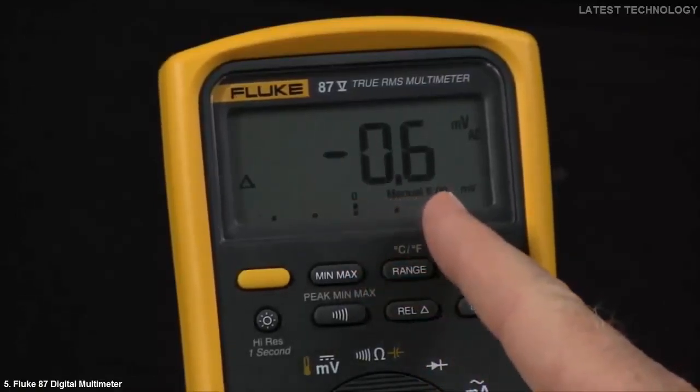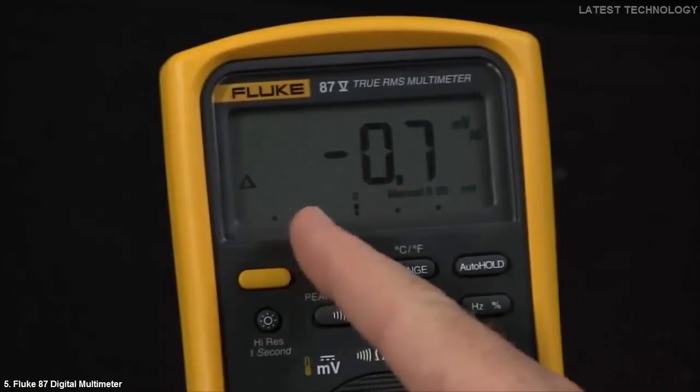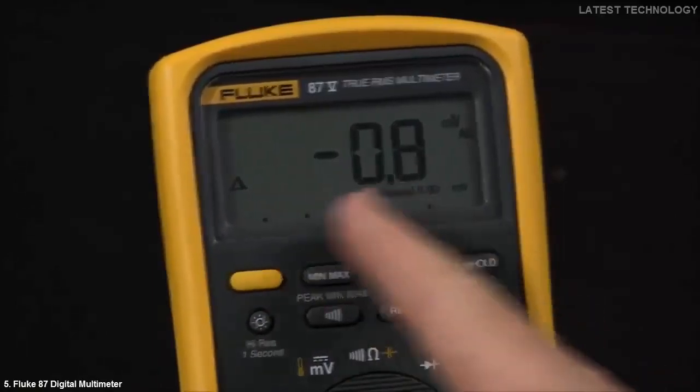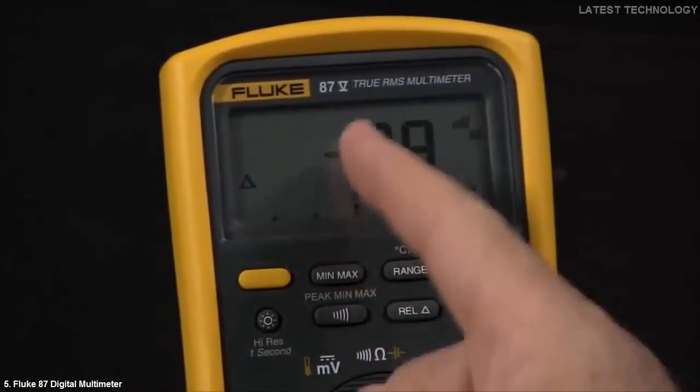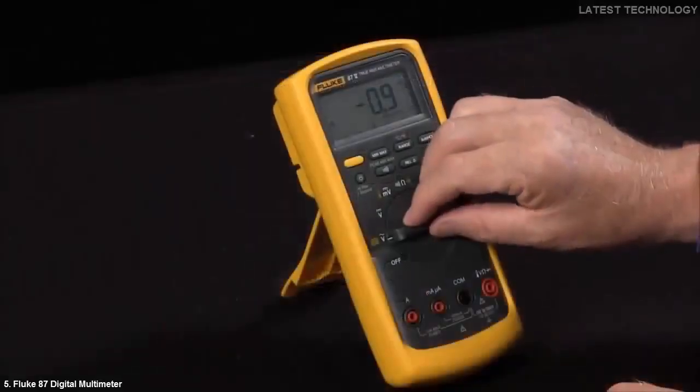If the reading goes higher, it will go this way. If the reading goes lower, it will go this way. So you can actually see how a signal is varying around the initial value that you took.